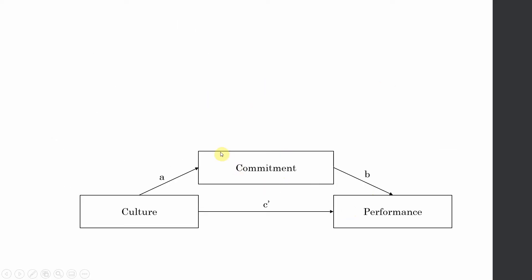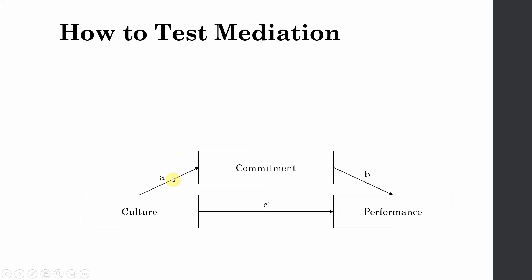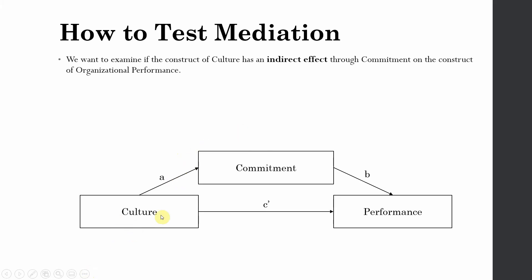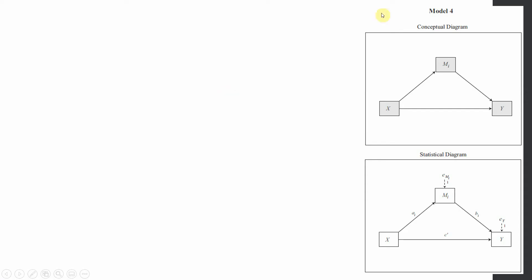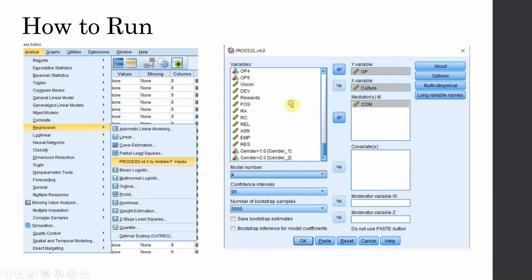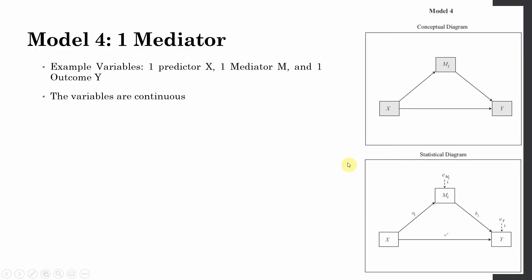Now this is the model I want to test today using Hayes Process Macro, where culture is my independent variable, commitment is my mediator, and performance is my dependent variable. I want to examine if the construct of culture has an indirect effect through commitment on the construct of organizational performance. The direct effect is represented by C complement, the impact of culture on commitment by A, and the impact of commitment on performance by B. The variables are continuous in this case.